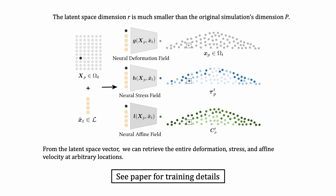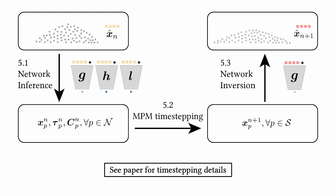From the latent space vector x-hat, we can retrieve the entire deformation, stress, and affine velocity at arbitrary locations. After training, to run new simulations, we only need to evolve in this low-dimensional latent space. Therefore, instead of updating 3P degrees of freedom, we reduce the computation cost by only updating r degrees of freedom.